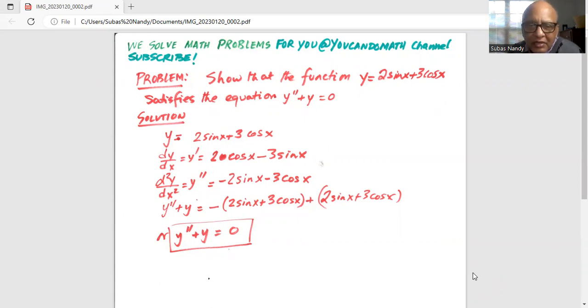Now the second derivative of y with respect to x, d²y/dx² or y''. The derivative of 2cos(x) is -2sin(x), and the derivative of -3sin(x) is -3cos(x).